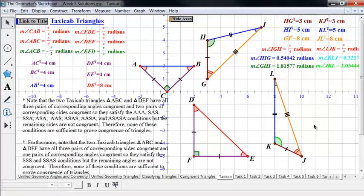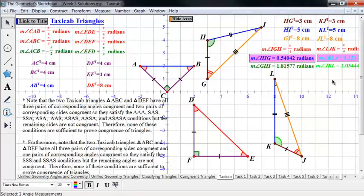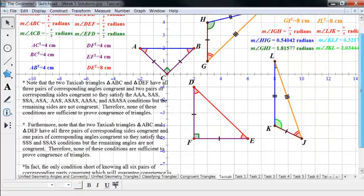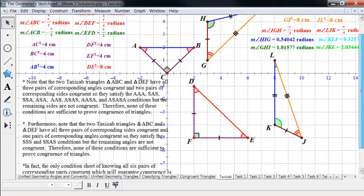This red angle is a 45 degree angle or a pi over four radian angle. Now when you look at the other angles, however, and I've measured them, these green ones correspond but they're not congruent. And the light blue here and the dark blue here, they correspond but they are not congruent. So that example there knocks out the side side side and side side angle side conditions.